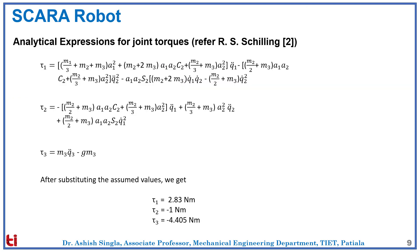So these are the analytical expressions for the 3 joint torques: tau1, tau2, and tau3. We substitute all the values that we saw in the previous slide, and we get the following results. Tau1 is 2.83 Newton meter, tau2 is minus 1 Newton meter, and tau3 is minus 4.405 Newton meter.